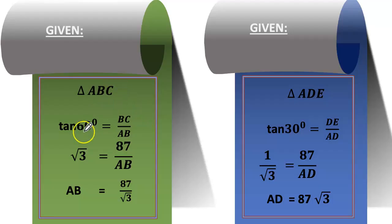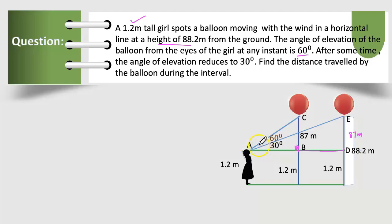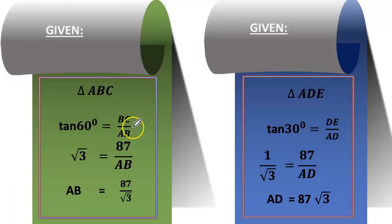So ABC, tan 60° is equals to BC by AB. So we know the length of BC, that is 87 by AB, therefore AB equals to 87 by √3.